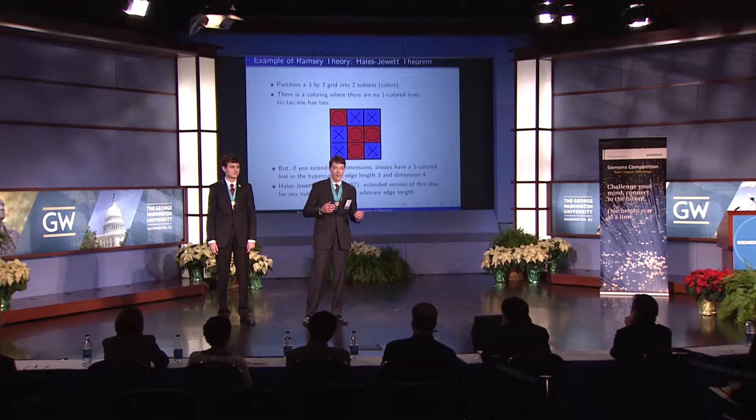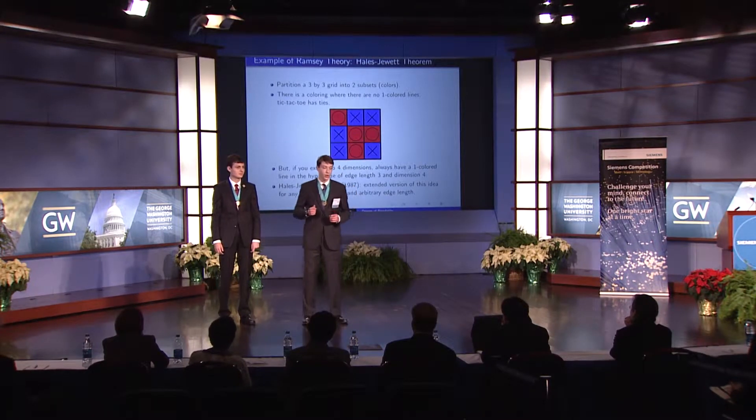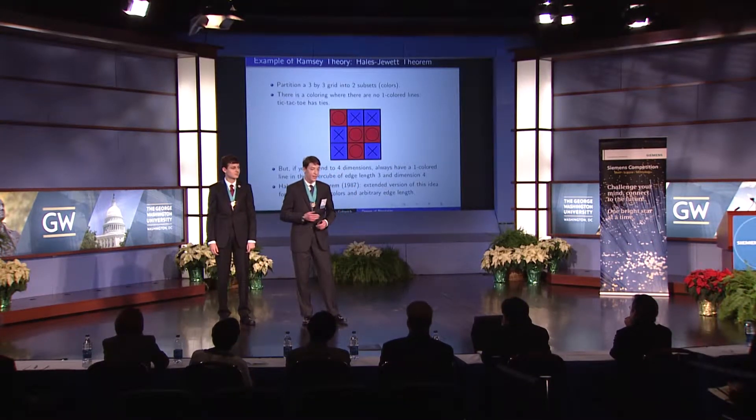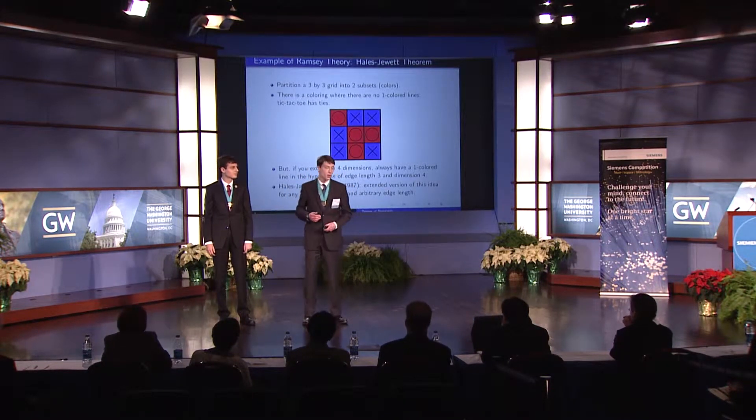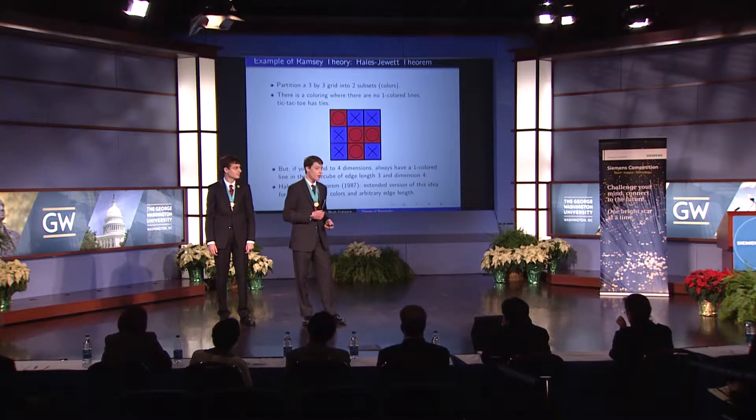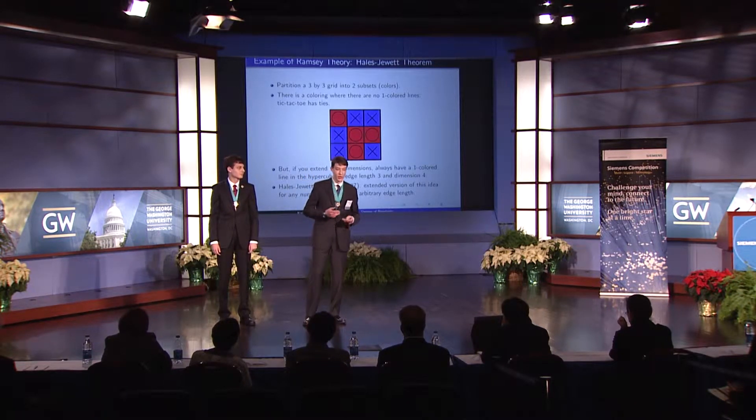In other words, if two players play tic-tac-toe in that hypercube, they will never have a tie. The Hales-Jewett theorem extended the idea of adding dimensions to guarantee one-colored lines to any number of colors and edge length. In this example there are two colors, red and blue, which is also the number of players, and the edge length is 3. Hales and Jewett show that this result will be true for any number of colors and edge length.